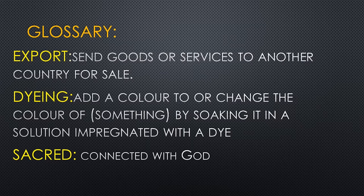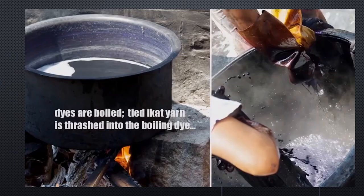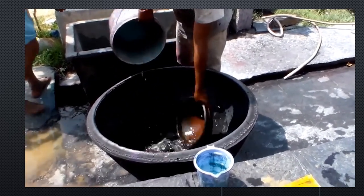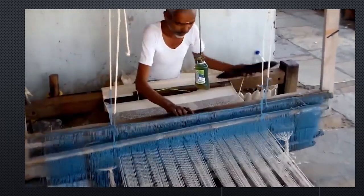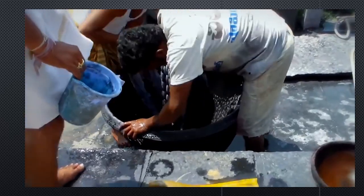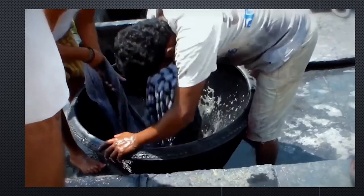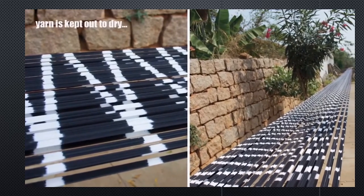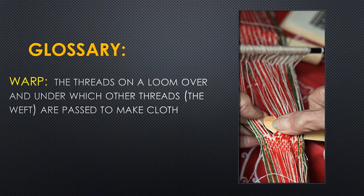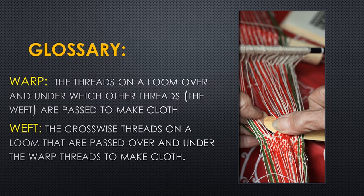Children, let's see what is meant by dyeing in a small video. Warp — the threads in a loom over and under which other threads are passed to make cloth. Weft — the crossways threads on a loom that are passed over and under the warp threads to make cloth.